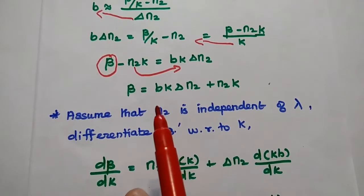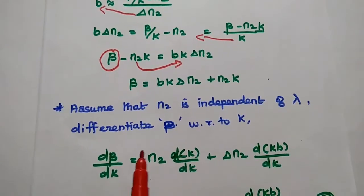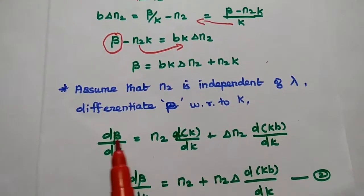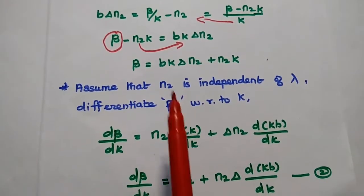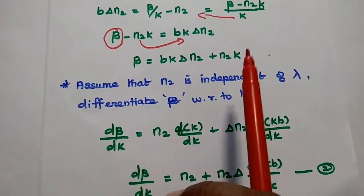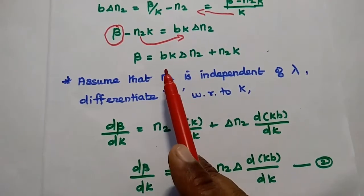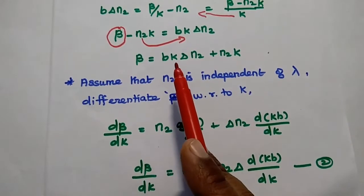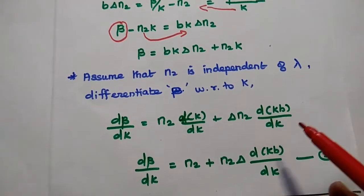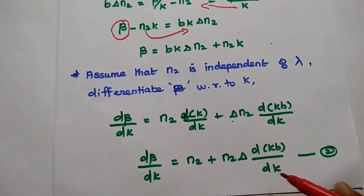Assuming the refractive index of the cladding n2 is independent of wavelength λ, we differentiate the propagation constant with respect to the free space propagation constant k. So dβ/dk = n2 (constant) plus Δn2·d(kb)/dk. Since n2 is constant with respect to λ, its derivative term becomes 1, and both b and k are functions of k, so we differentiate accordingly: dβ/dk = n2 + Δn2·d(kb)/dk. This is the second equation.